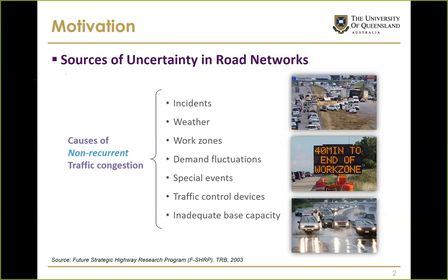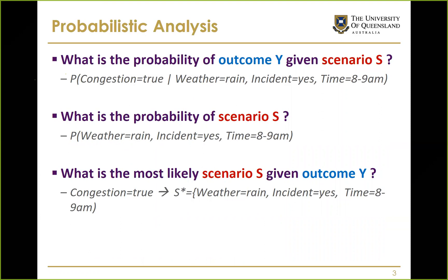There are seven major factors or causes for unreliable travel time or non-recurrent traffic conditions, which include incidents, weather, roadworks, medical operations, special events, traffic control devices, and inadequate base capacity.